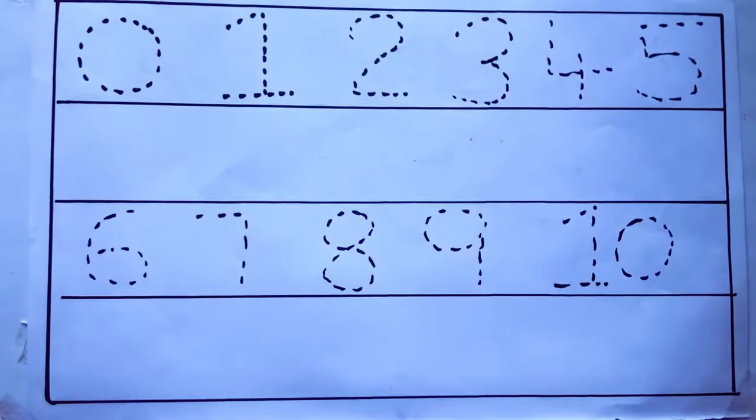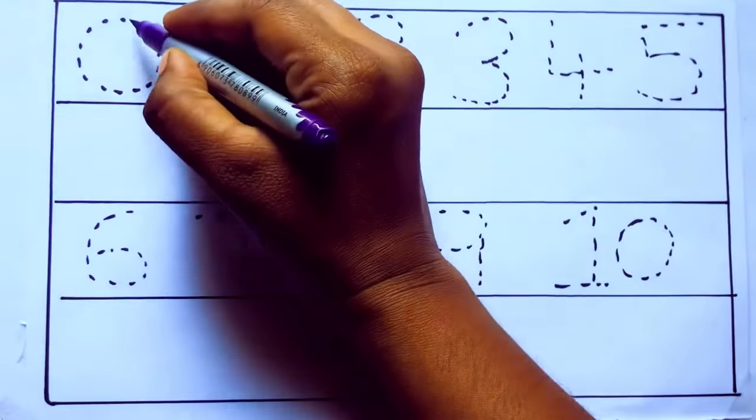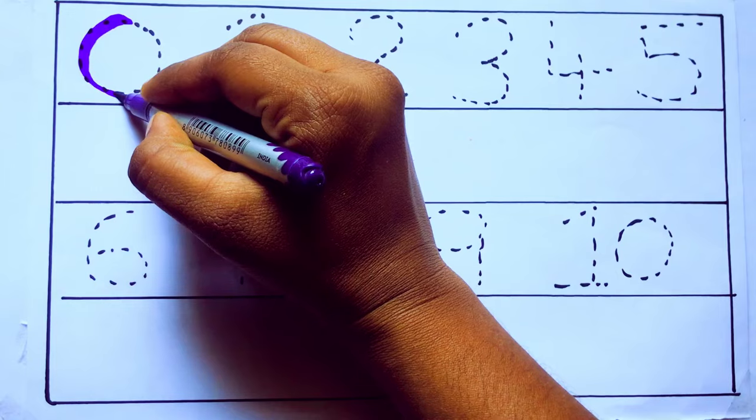Let's draw numbers. Violet color, 0, Z-E-R-O.